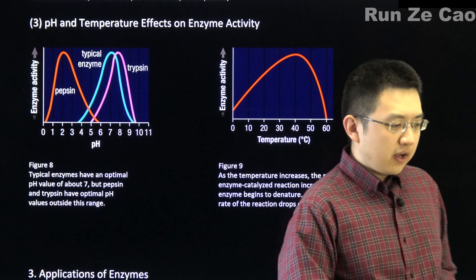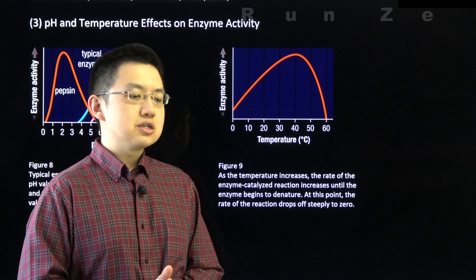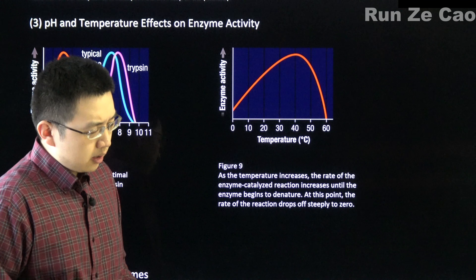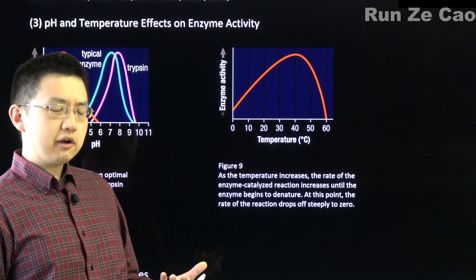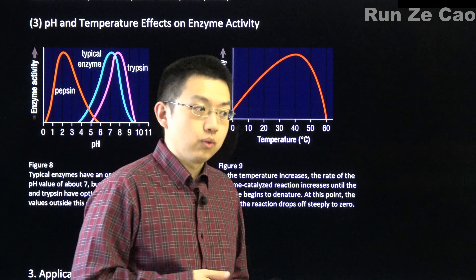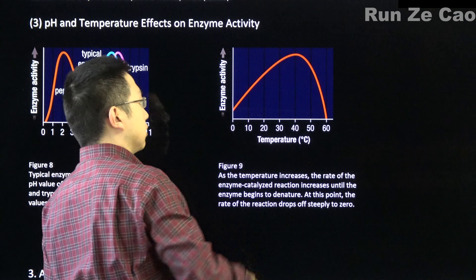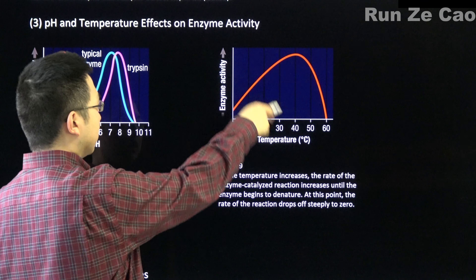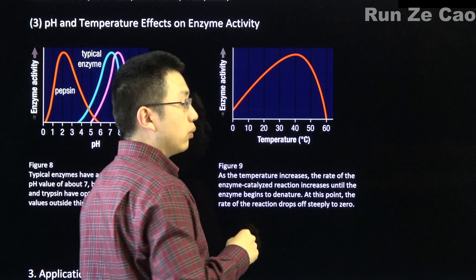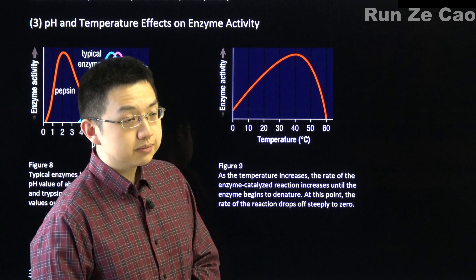pH and temperature effects on enzymes: if we boil an egg, the egg white no longer looks like the usual globular proteins — it has denatured. Globular proteins are normally water-soluble, but boiled egg white cannot be redissolved. Like other proteins, enzymes will denature at high enough temperatures. Various enzymes have different activity curves depending on temperature, and different organisms will have different activity curves for what are labeled the same enzyme.